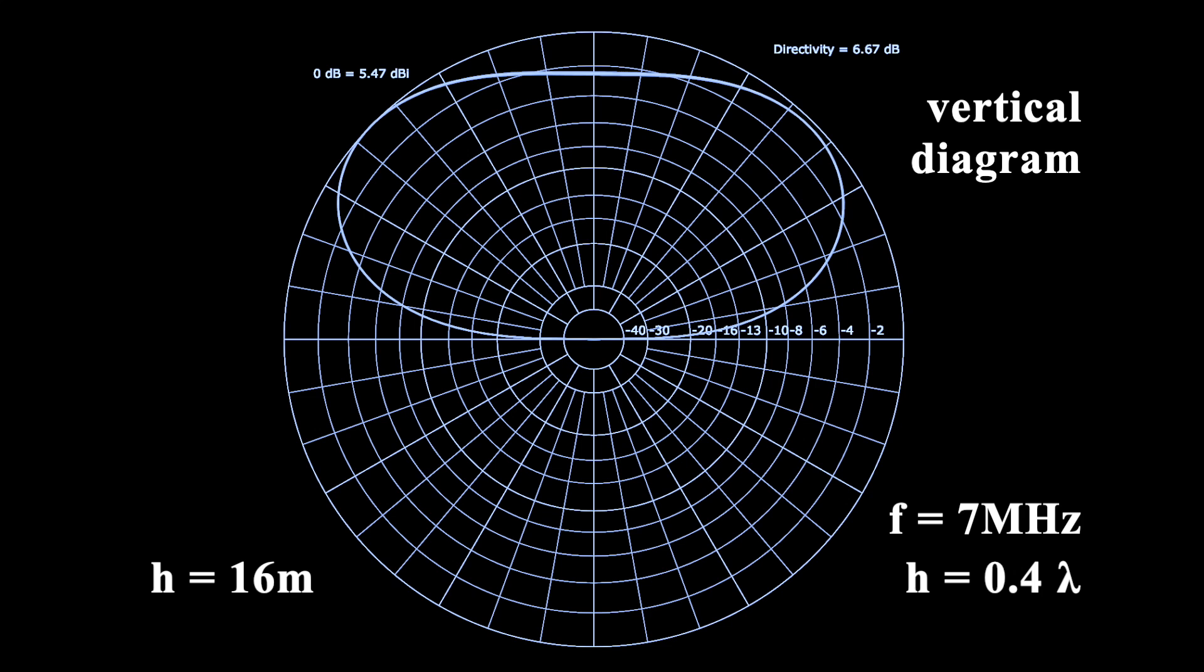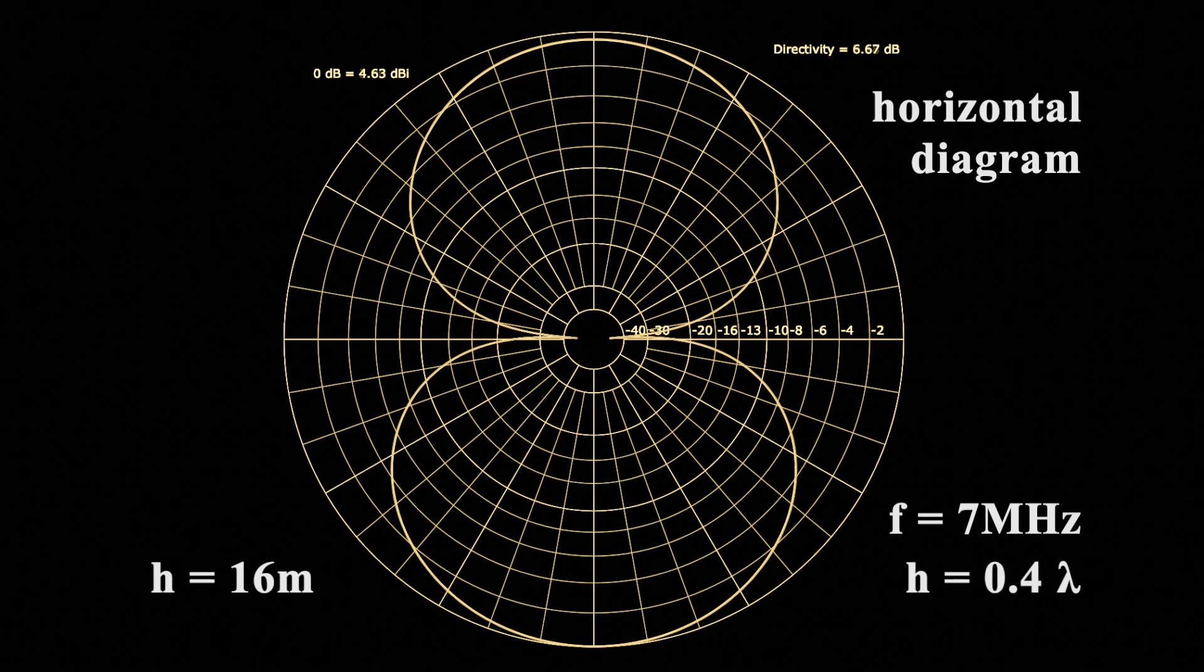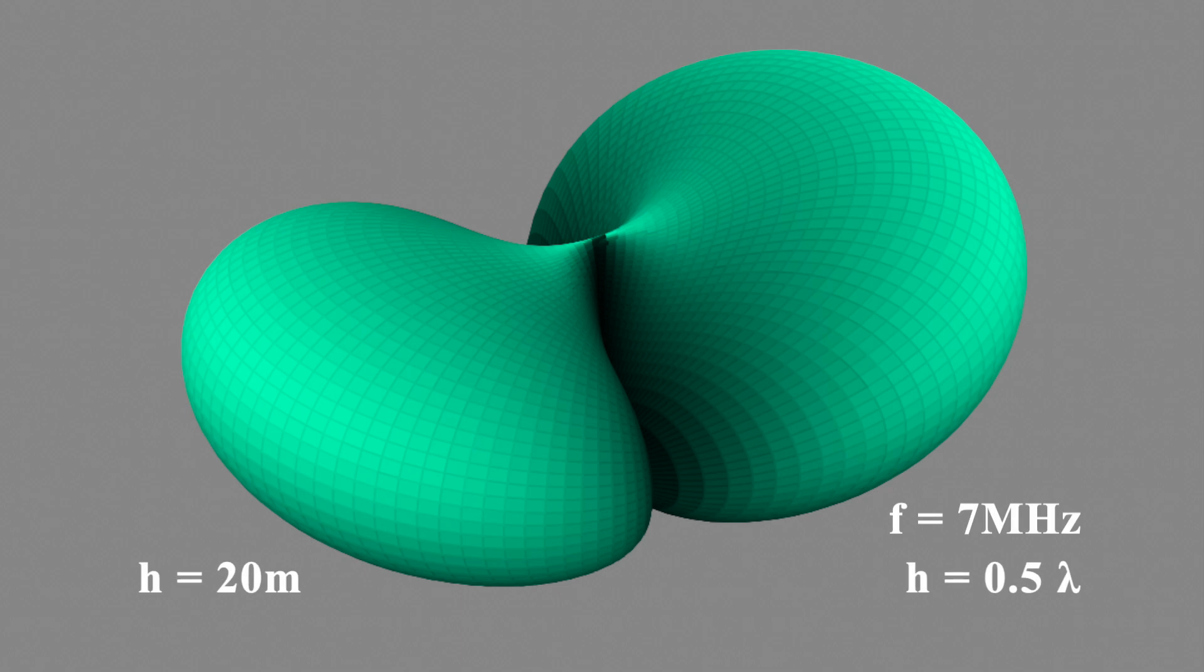At a height of 16m, the main lobe is rising to 40 degrees elevation. And the lower the height above ground, the less energy is radiated to the side. As an effect of this, the horizontal gain is decreasing, even when the radiation pattern is retaining its shape.